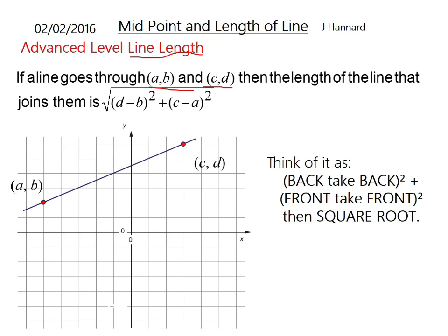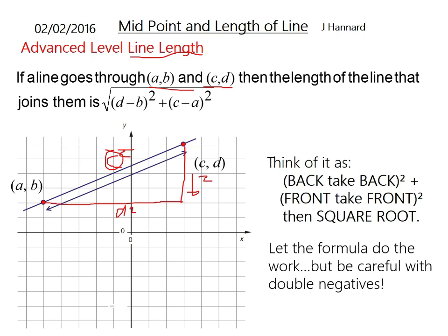For you eagle eyed people, this formula comes from the wonderful world of Pythagoras, where A squared plus B squared must equal C squared. If we wanted C, we will have to root the answer of them added together. That is pretty much what that is. Let the formula do the work, but be careful of double negatives, especially in this because it can be quite difficult.